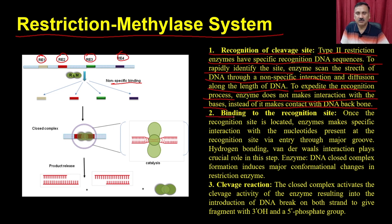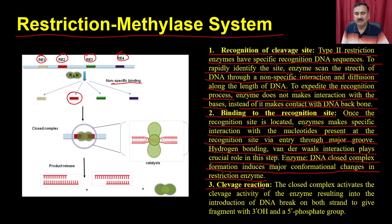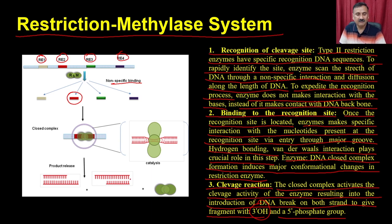Once the recognition site is located, the enzyme makes a specific interaction with the nucleotides at the recognition site via entry through the major groove. Hydrogen bonding and van der Waals interactions play a crucial role. The enzyme-DNA closed complex formation induces major conformational changes, activating the cleavage activity — introducing DNA breaks on both strands to give fragments with 3-prime hydroxyl and 5-prime phosphate ends.